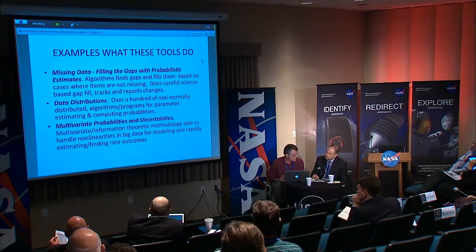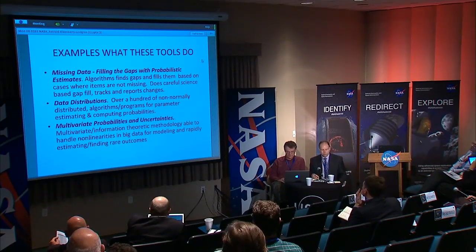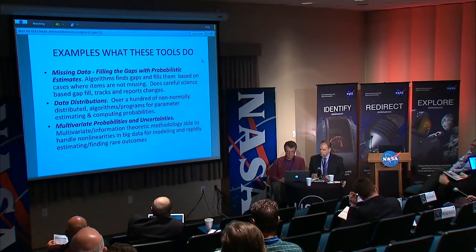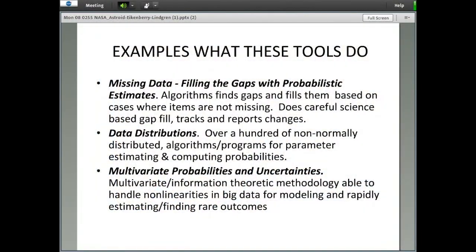The data distributions: through the years we have developed analysis of more than 100 non-normally distributed distributions and have specified, developed, and created algorithms and computer programs for estimating the parameters and computing the probabilities. We believe that many of those will be relevant to the near-Earth object and asteroid characterization problems, and that our method of developing data distribution publications and software can be applied in this field with good utility.